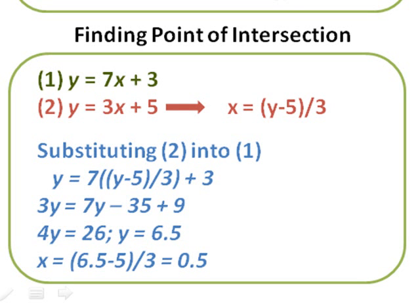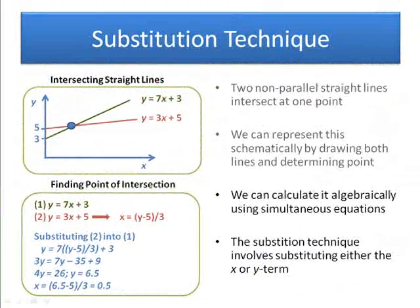I can now rearrange for y, that gives me y is 6.5, and now that I know my value for y, I can work out my value for x just by substituting it into one of the equations. x is equal to y minus 5 over 3, and that gives me 0.5.